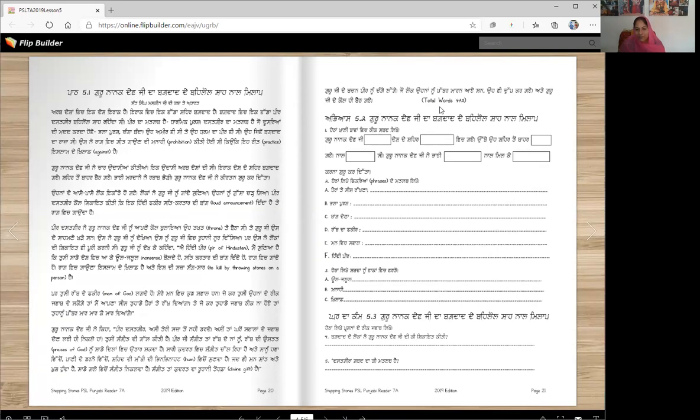So ee Chotti ji saakhi hai. Agle Kuch saakhiya vich Asi padaange Ke Oprashan ki si Te Guruji ni unna de Uttar ki dittte. Ais saakhi de vich 442 shabad ne Te to anu kinne mint Laggange Ae pardvaas de. Tushi timer laake Padge dekha na. To anu shayad 6 mint 5 mint Laggane chahi De ne, Ais toh jada Ne.